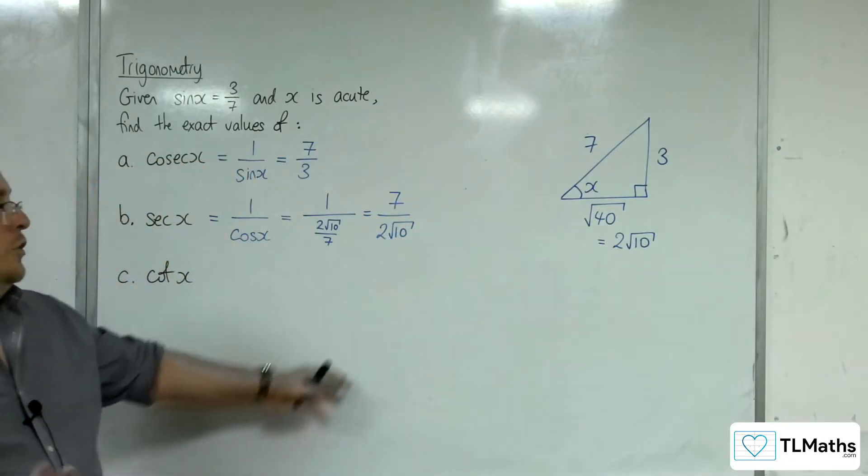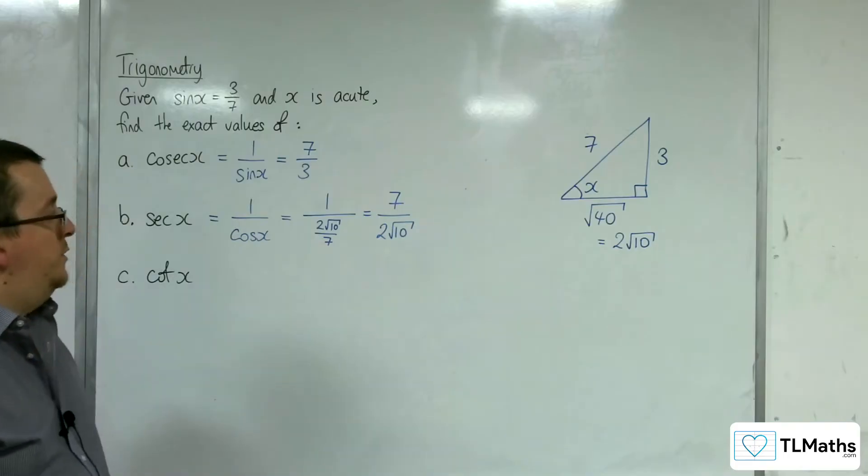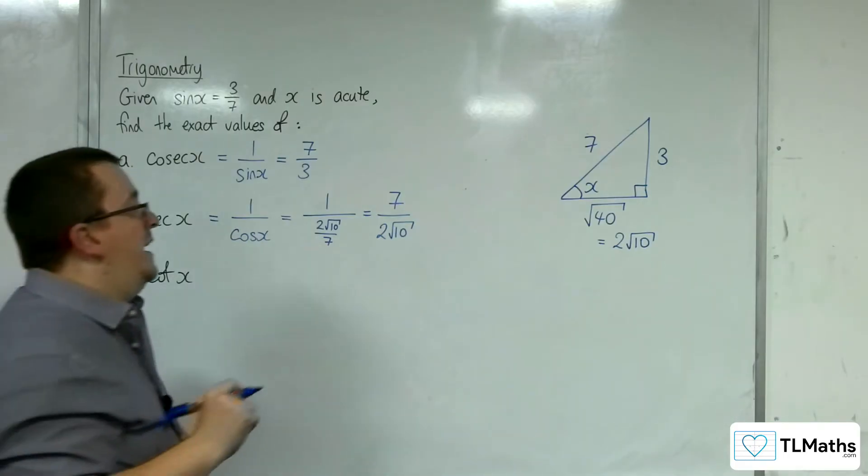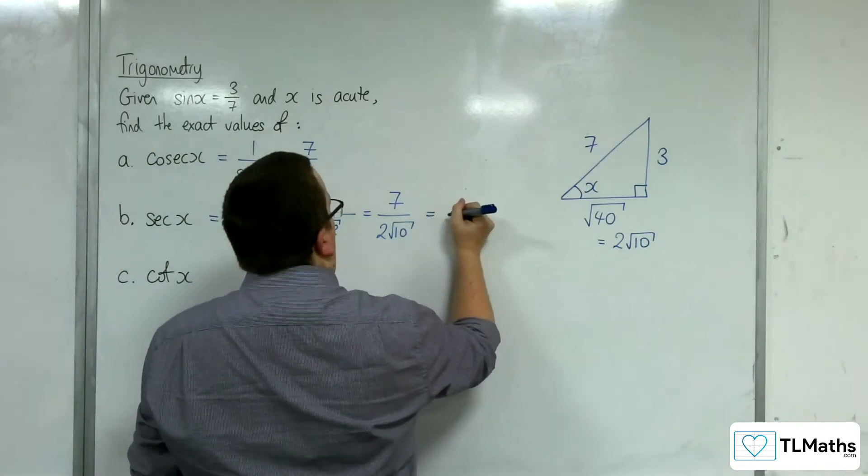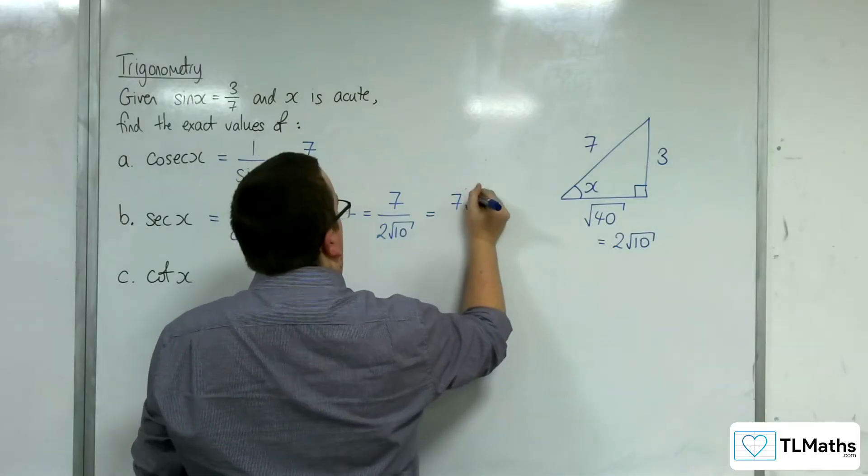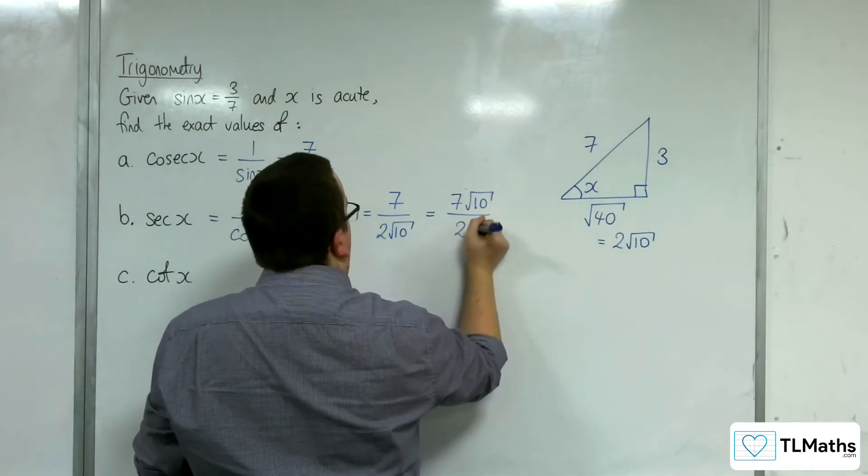You could also rationalize the denominator by multiplying top and bottom by √10, giving 7√10/20.